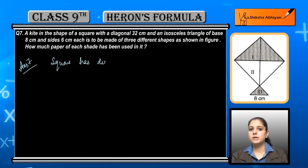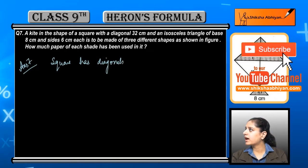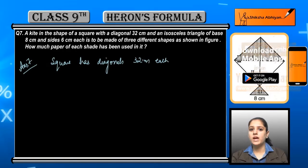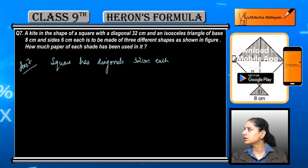Let us see how. First, the upper portion is square. So square has a diagonal of 32 meters. We have already given a question that the diagonal is 32 cm each.